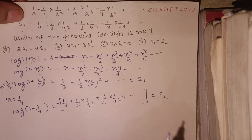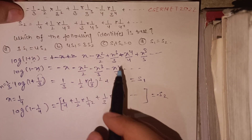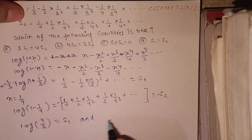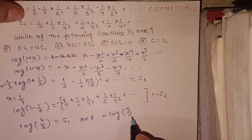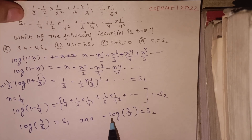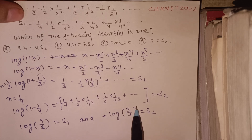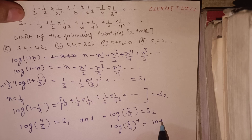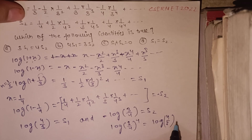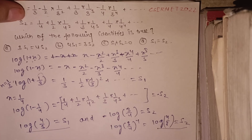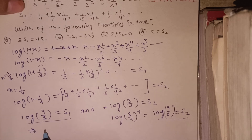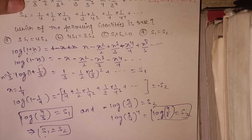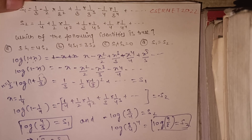So we have log(4/3) = S1, and minus log(3/4) = S2. Using the log property that a number in front of log goes into the power, minus log(3/4) equals log(3/4)⁻¹ which equals log(4/3). Therefore S1 equals S2. This is the correct solution to this question based on the sum of series.